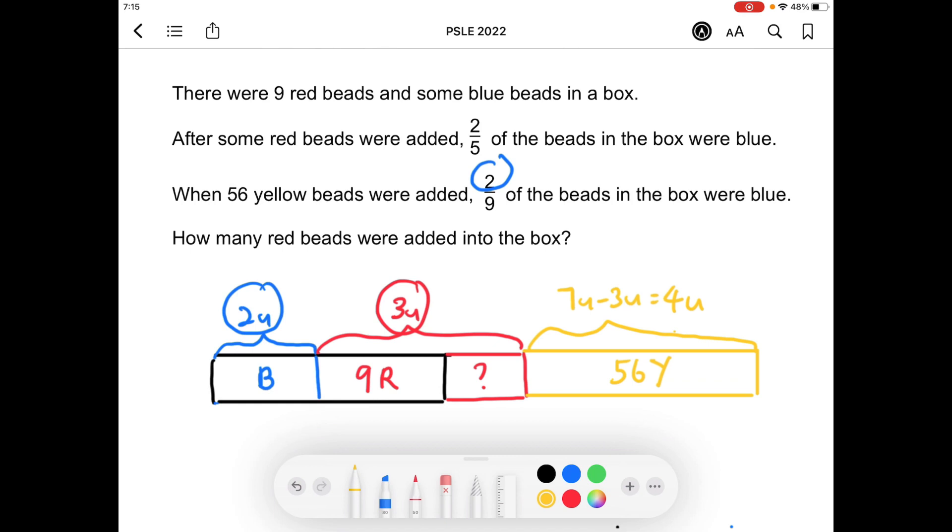The 56 yellow bits, so I think with this model we are able to solve the question easily. 56 yellow bits is the same as 4 units. We're going to divide by 4 to find 1 unit, and then we're going to multiply by 3 to find out how many red bits there were all together.